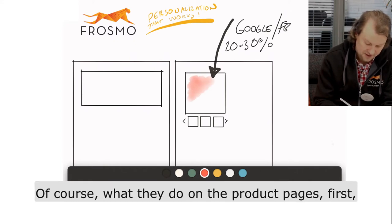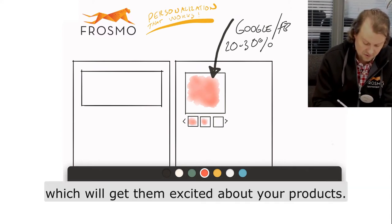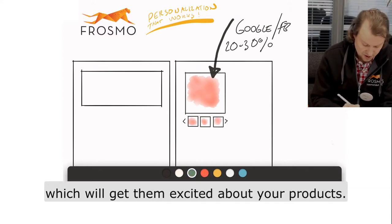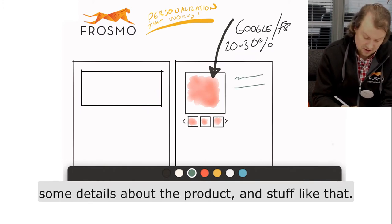Of course, what they do at the product page is first they take a look at the great looking images, which get them excited about your products. Then they'll check out the price, availability, and some details about the product.